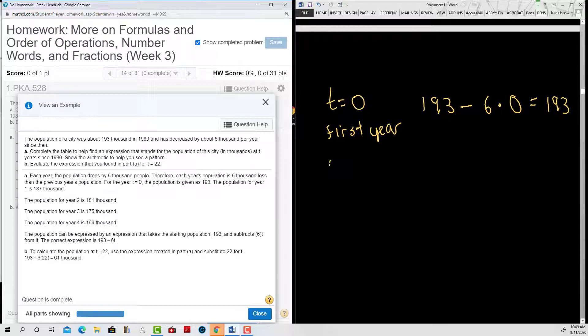Then one year later, that's t equal to 1. That's the second year. That initial population is 193 and it decreased by 6,000.